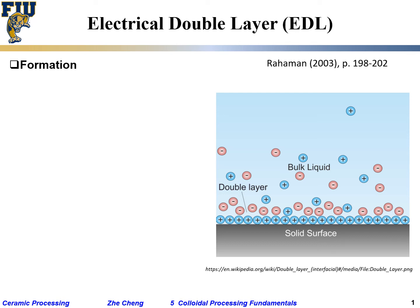Let's continue into the concept of the electrical double layer. As illustrated here, we have a solid surface covered by a densely packed layer of positive charge. Whatever its origin — isomorphic substitution, preferred dissolution — because of this dense layer of positive charge, it has a tendency to attract negatively charged ions.